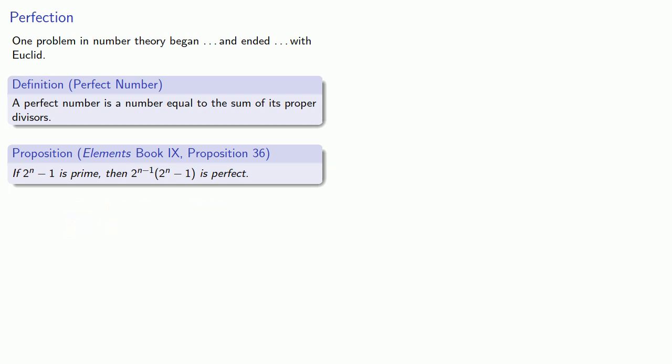And this gives us a way to generate perfect numbers. For example, since 2^2 - 1 equals 3 is prime, then 2^(2-1) times (2^2 - 1), that's 6, is perfect.